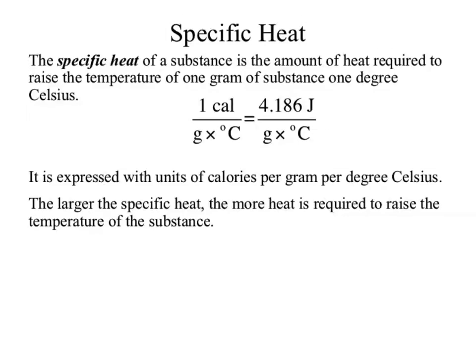Specific heat is an actual property of a material. If I look at the specific heat for an individual sample, what I'm referencing is the amount of energy — measured in joules or calories — that causes the sample to increase in temperature by one degree Celsius. So how much energy do I have to put into a gram of this sample to get it to go up by one degree? That is different for all materials, so it's a characteristic of our material.